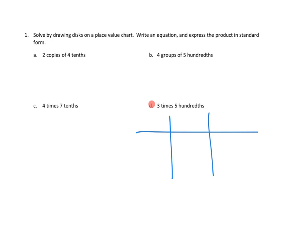We've got ones here, we've got tenths here, and we've got hundredths over here. Awesome. 3 times 5 hundredths. First I need my five hundredths. 1, 2, 3, 4, 5. Excellent.